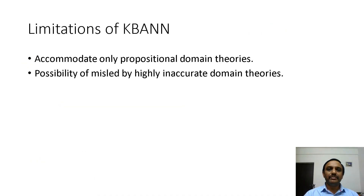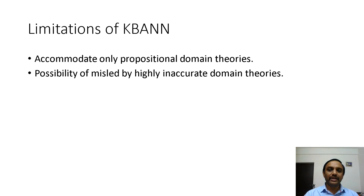These are the limitations of Knowledge-Based Artificial Neural Network. It accommodates only propositional domain theories — collections of variable-free Horn clauses. There is a possibility of being misled by highly inaccurate domain theories, such that its generalization accuracy can deteriorate below the level of the backpropagation algorithm.